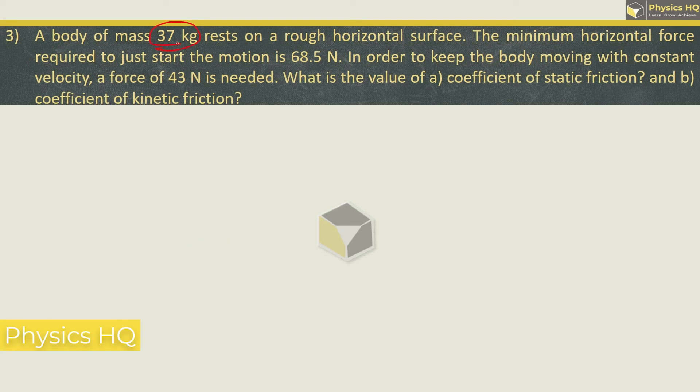A body of mass 37 kg rests on a rough horizontal surface. The minimum horizontal force required to just start the motion is 68.5 N. That means this is nothing but the limiting force 68.5 N. In order to keep the body moving with constant velocity, a force of 43 N is required. This means we are talking about kinetic force.